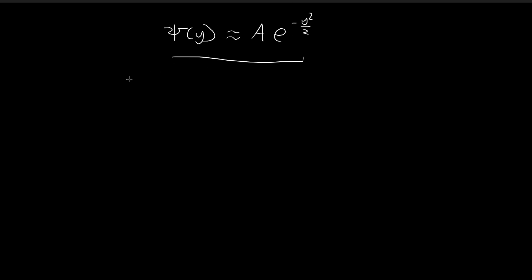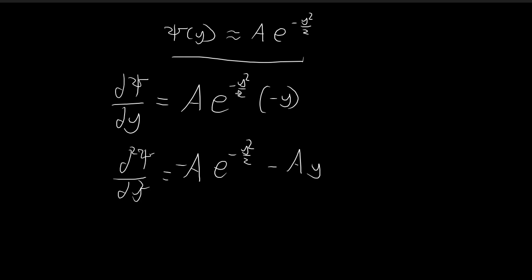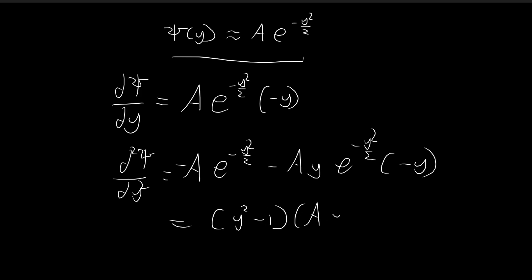Let's take the first derivative of xi. We can just use the chain rule — we retain this term and then differentiate the exponent, which becomes negative y. Moving on to the second derivative, we use the product rule: we retain this term and differentiate this, which is just equal to 1, and then retain this term and differentiate the other, giving negative y. In the end we get y-squared minus 1, times a times e to the power of negative y-squared over 2.